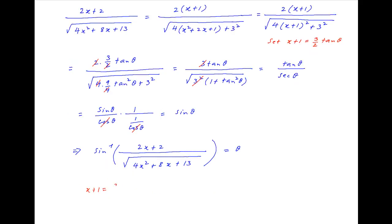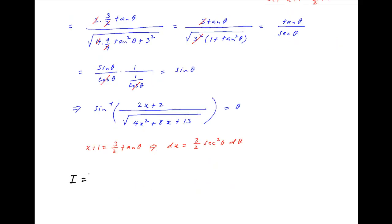Now since x plus 1 equals (3/2) tan θ, taking the derivative of both sides gives dx equals (3/2) sec²θ dθ. We substitute these results into the given integral to get the integral of θ times (3/2) sec²θ dθ, which equals (3/2) times the integral of θ sec²θ dθ.